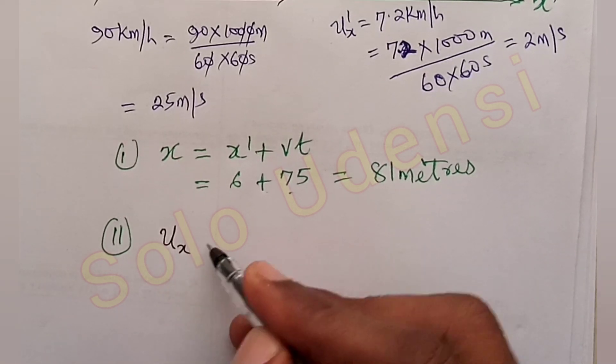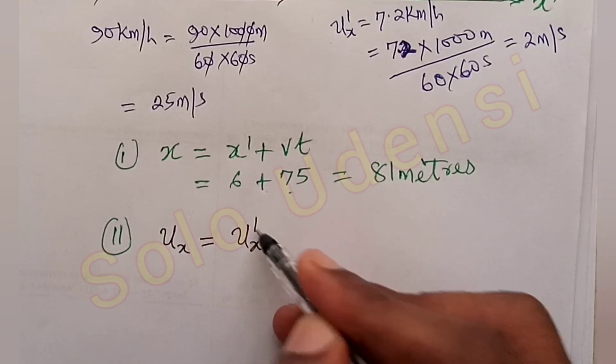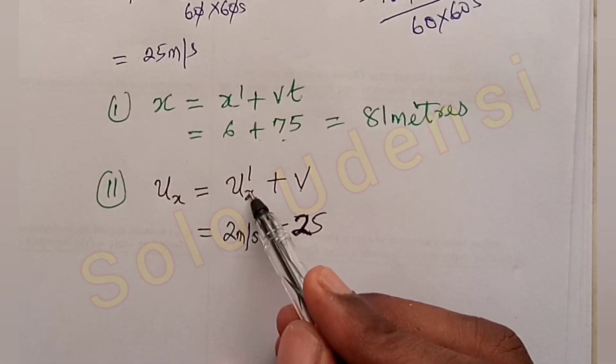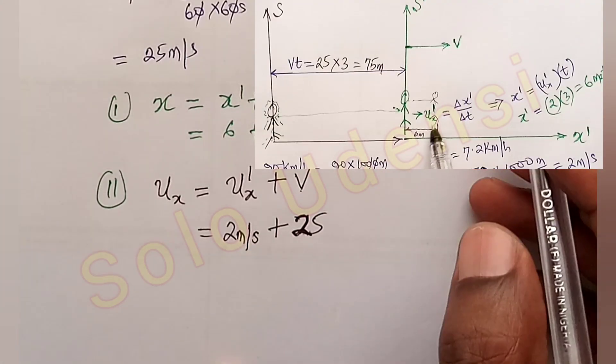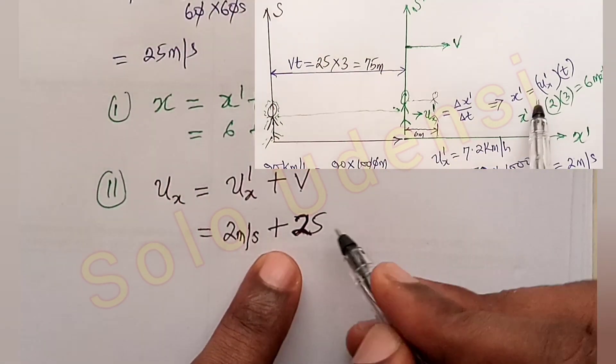You have ux is equal to ux prime plus v. Ux prime we have calculated is 2 meters per second and the bus is moving at 25 meters per second.